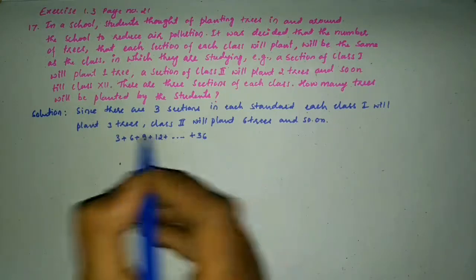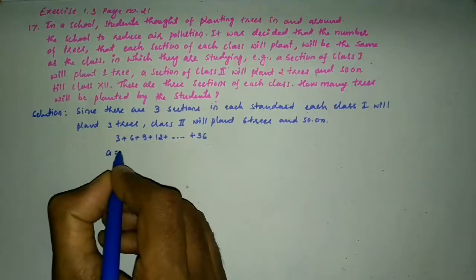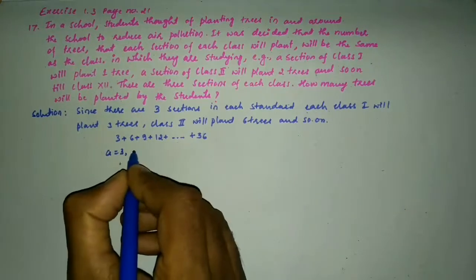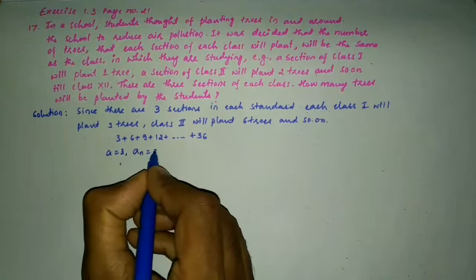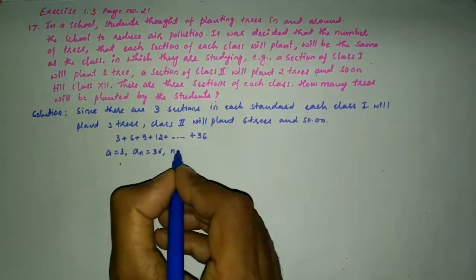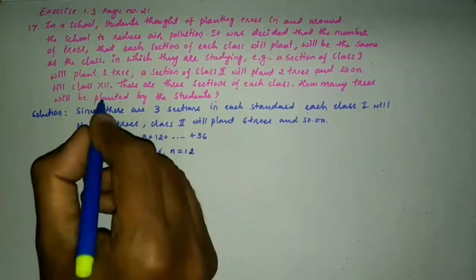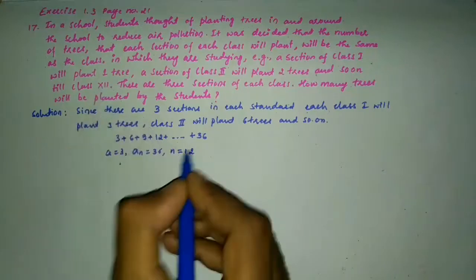So, 12 threes are 36. The first term a is equal to 3, and the nth term a_n is equal to 36, and n is equal to 12 because the number of classes are 12.